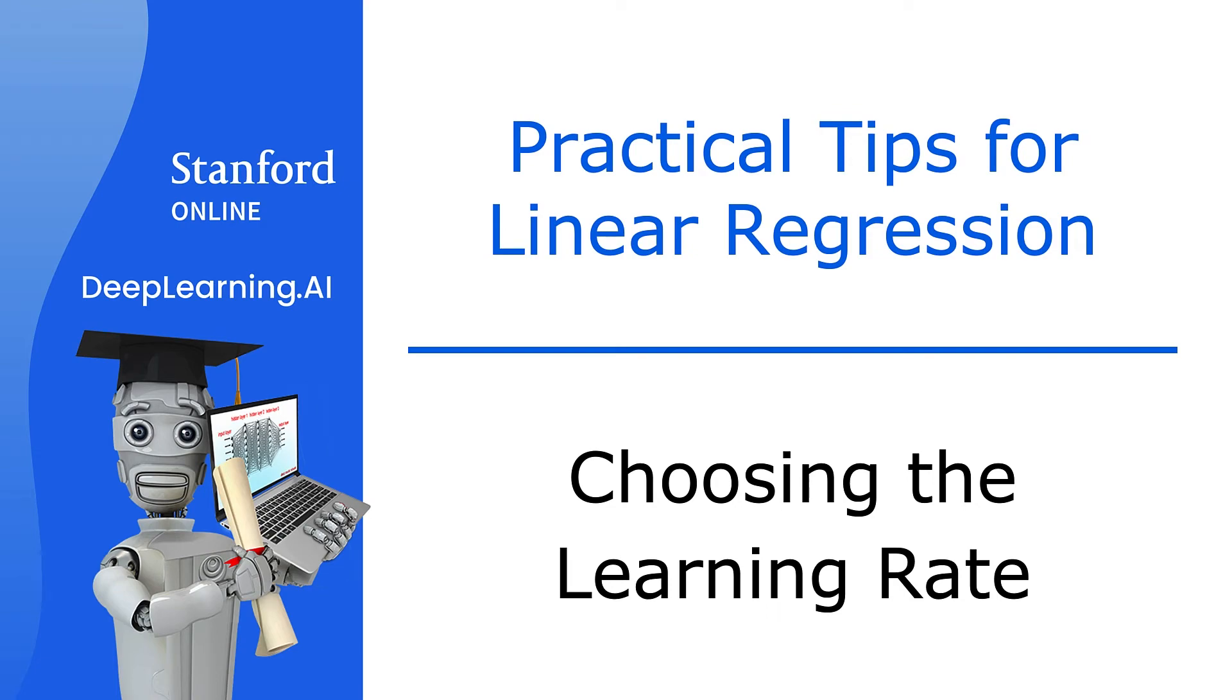Your learning algorithm will run much better with an appropriate choice of learning rate. If it's too small, it will run very slowly, and if it's too large, it may not even converge. Let's take a look at how you can choose a good learning rate for your model.